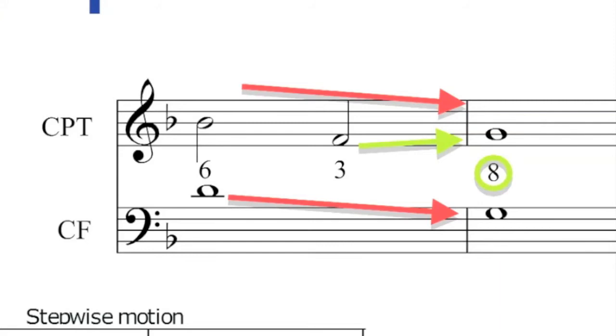So in this case that F on the weak beat provides just enough contrary motion across the bar line to make the motion, the similar motion from strong beat to strong beat okay.